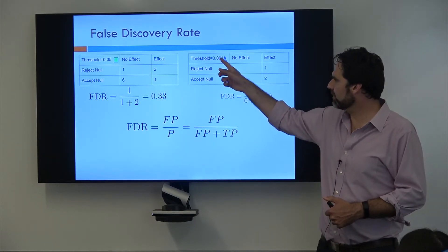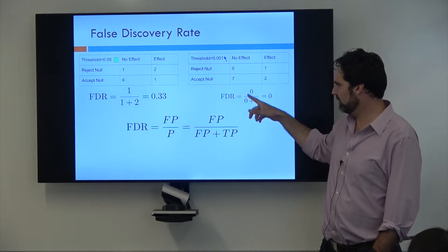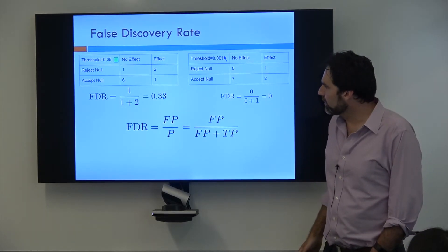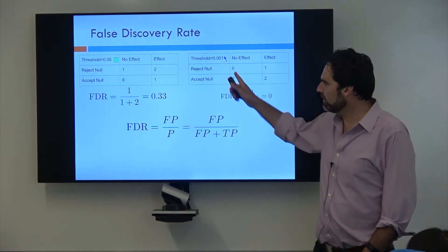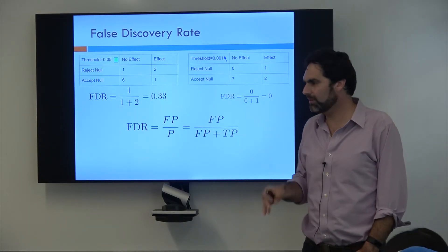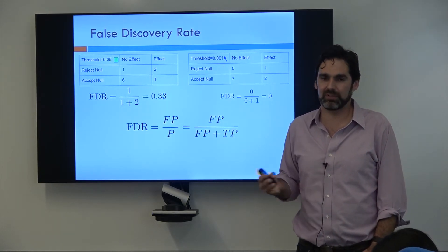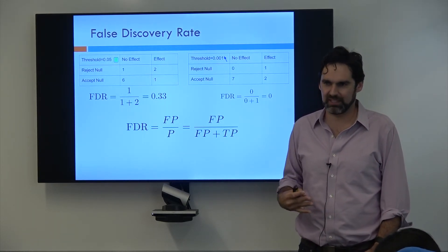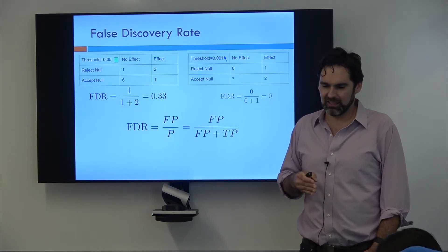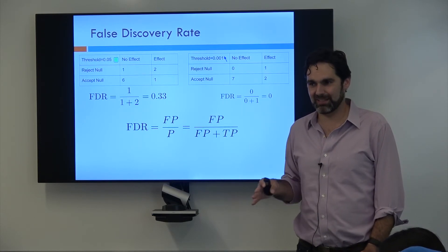So yeah, as you increase the threshold, because you no longer have that false positive, it decreases your false discovery rate. And there's actually a way that you can figure out what threshold you should use as your significant threshold so that you can control your false discovery rate at some level. Say you're willing to tolerate like 10% false discoveries or 20%. There is a way to actually figure out what your threshold should be for that. And it's complicated, and it's not something we're going to do in this module, but be aware that that does happen.